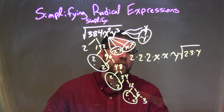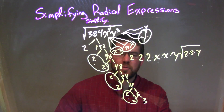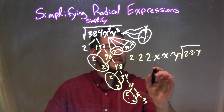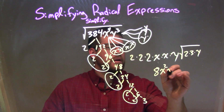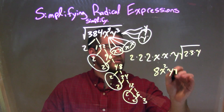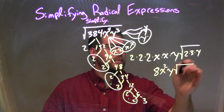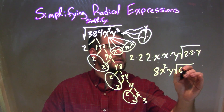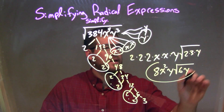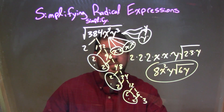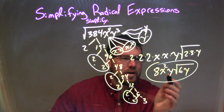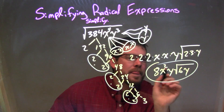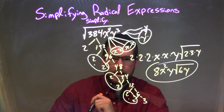So now let's simplify. 2 times 2 times 2: 2 times 2 is 4, times 2 is 8. So we have 8, x times x is x squared. So we have 8x squared y times the square root of 2 times 3, which is 6, and then y is just left by itself. Our final answer, when we simplified this, was 8x squared y times the square root of 6y.